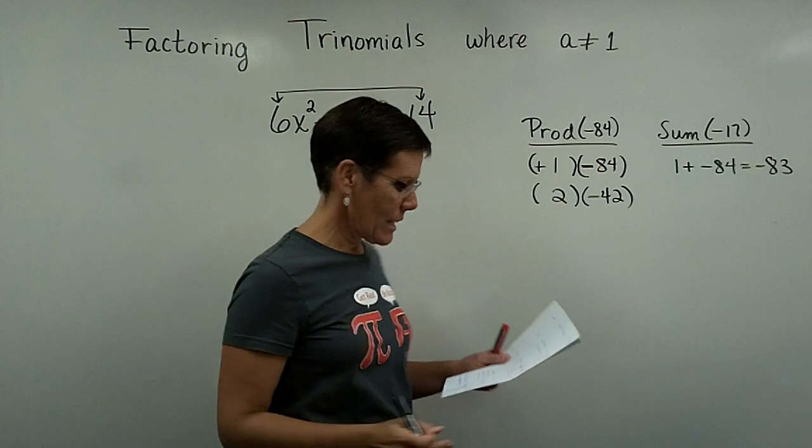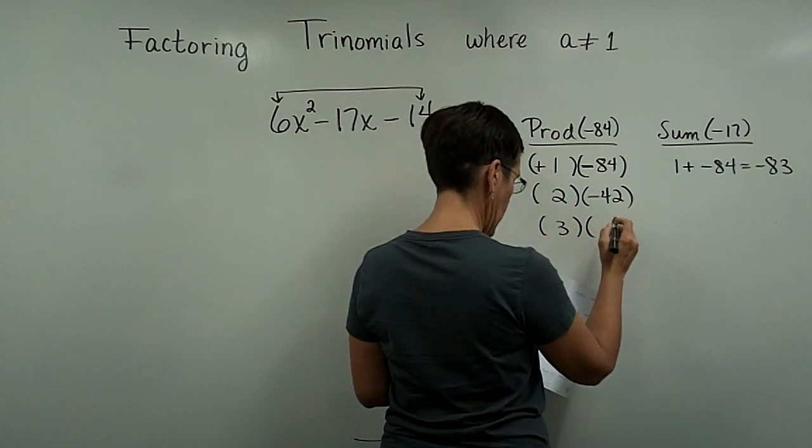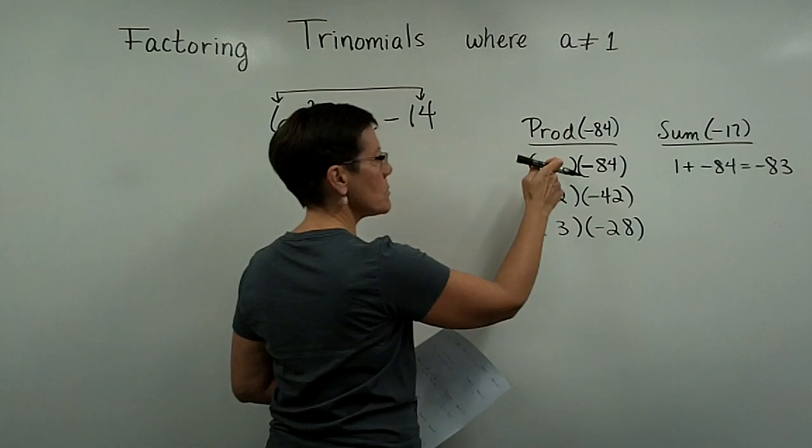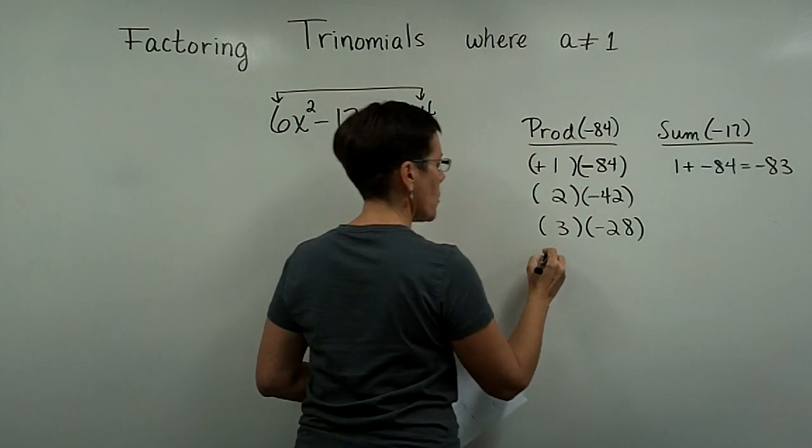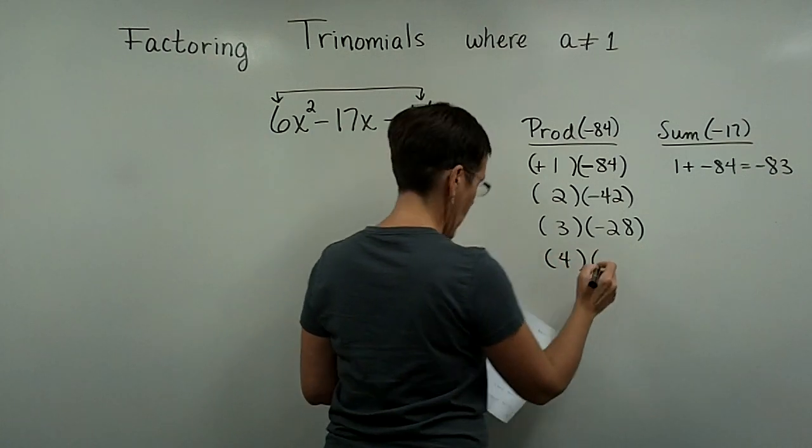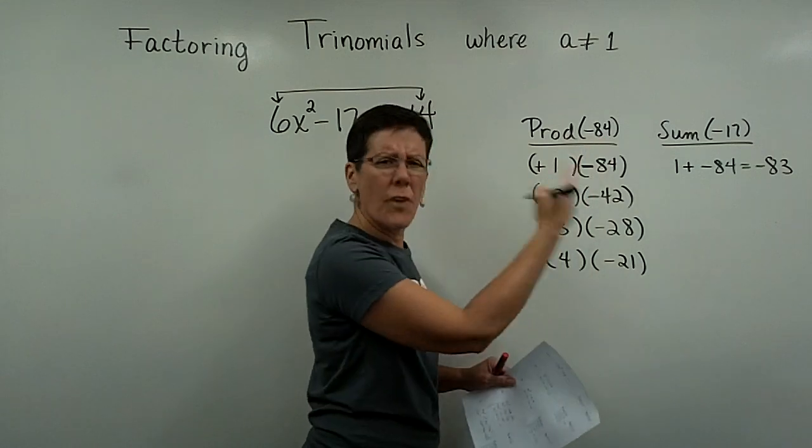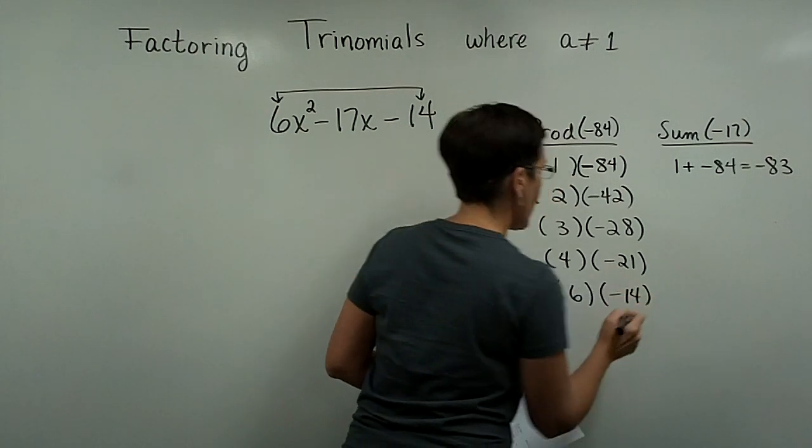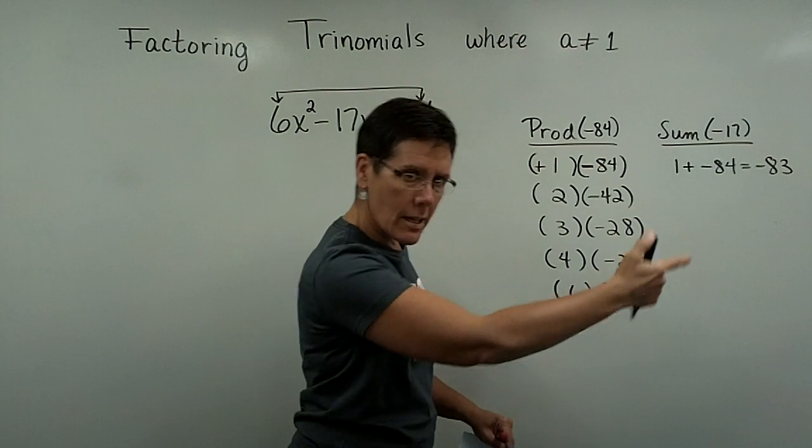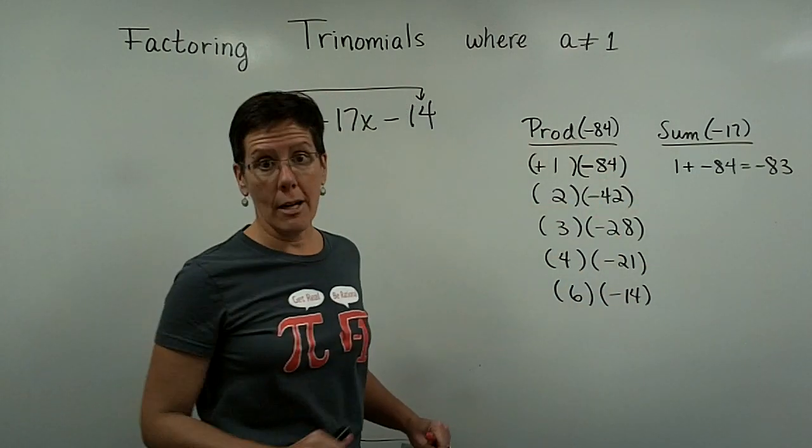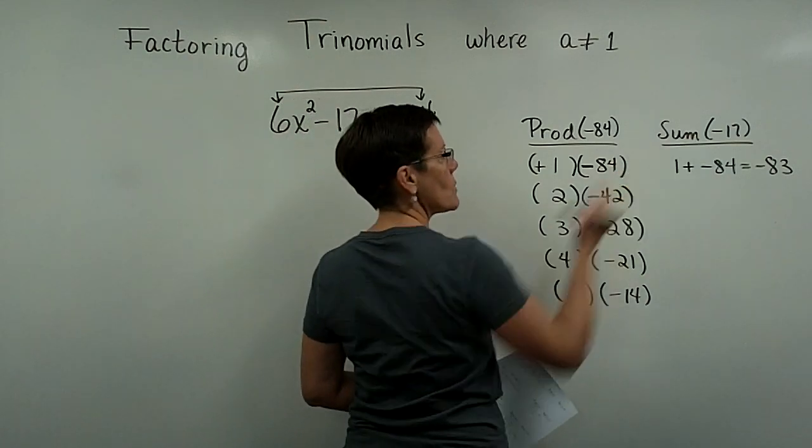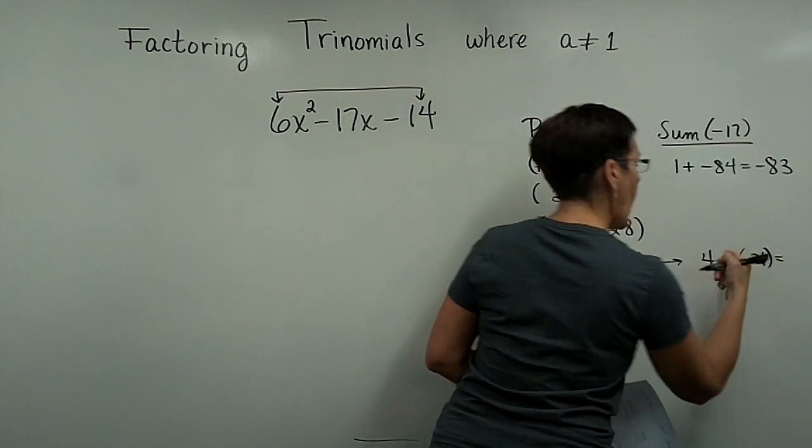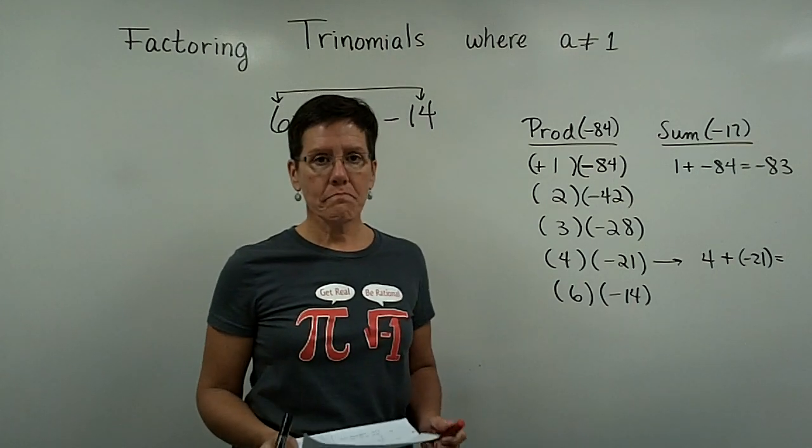Let's go with a positive 3 and a negative 28. I say to myself does 4 go into 84 and it goes into there 21 times. Does 6 go into 84? I think it does, 6 goes into 84 14 times. I want these two numbers to add to be a negative 17 and it looks like this is the pairing: 4 plus a negative 21 are the two numbers that add to be a negative 17.